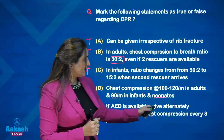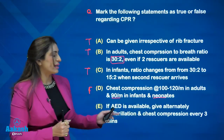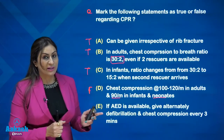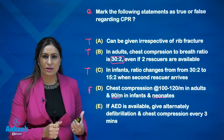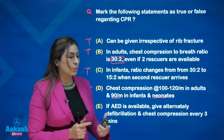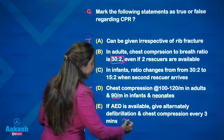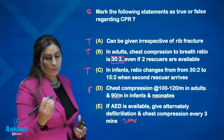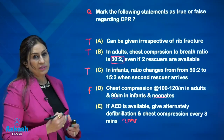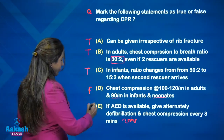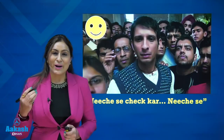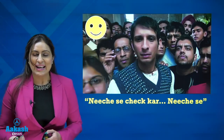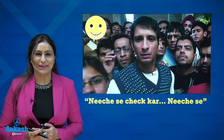Regarding AED use — the statement that defibrillation and chest compressions should alternate every 3 minutes is false. It should be every 2 minutes, or after 5 cycles of CPR. After reviewing this session, you should be well-prepared for these exam questions.